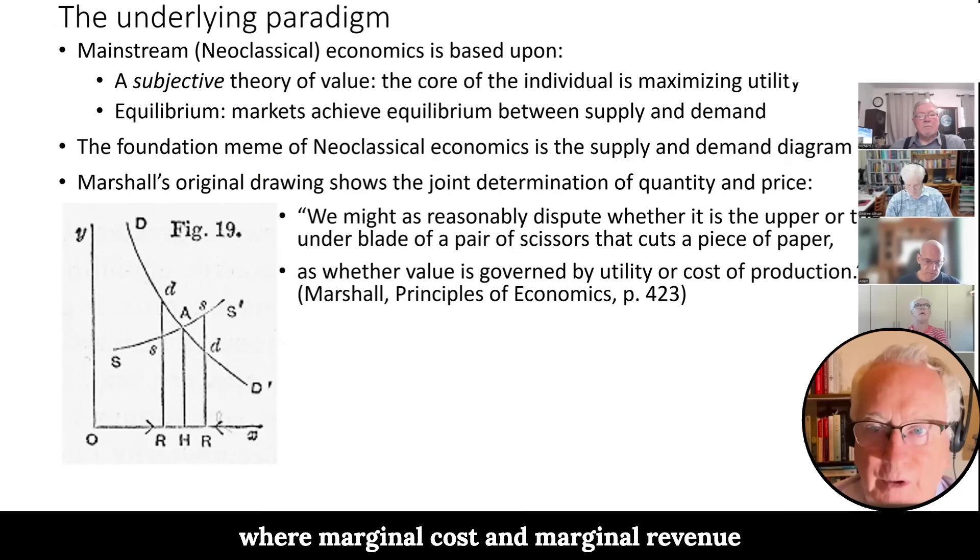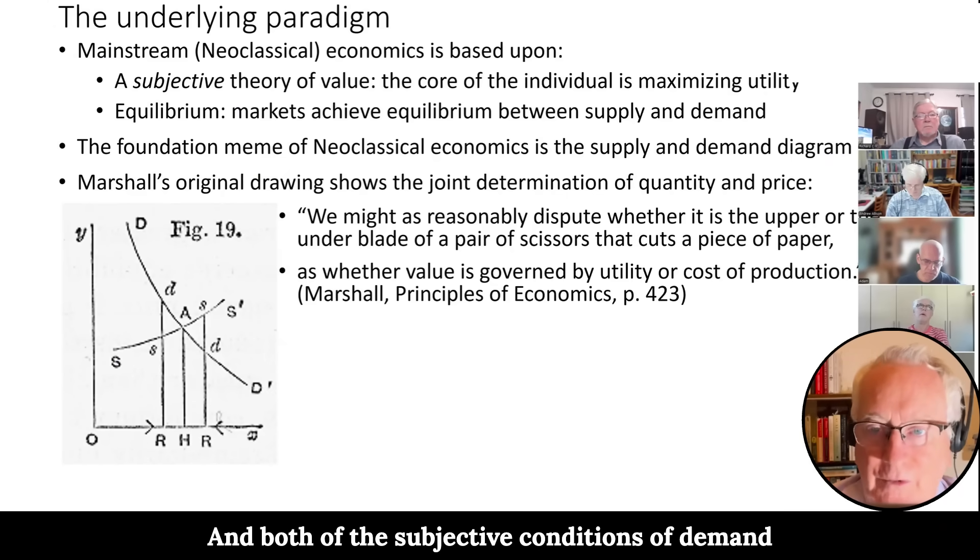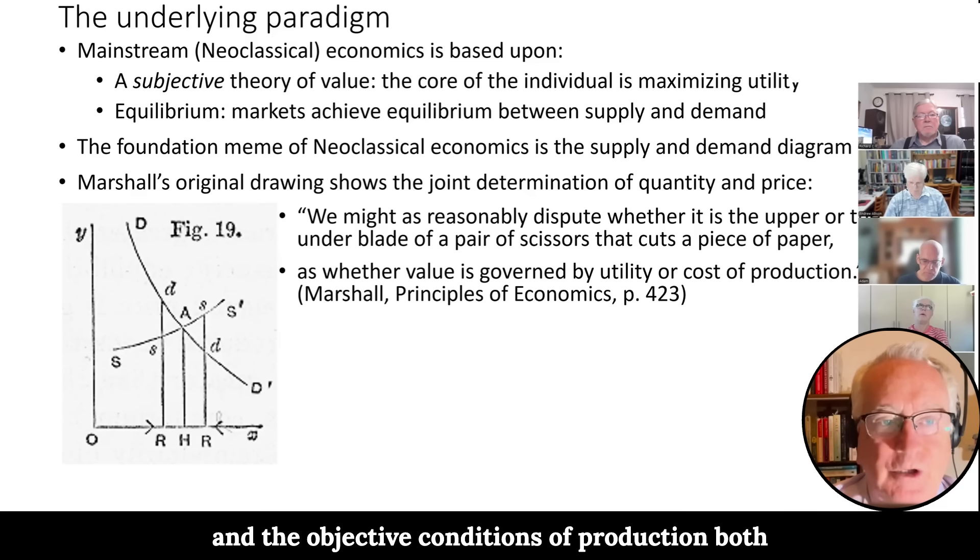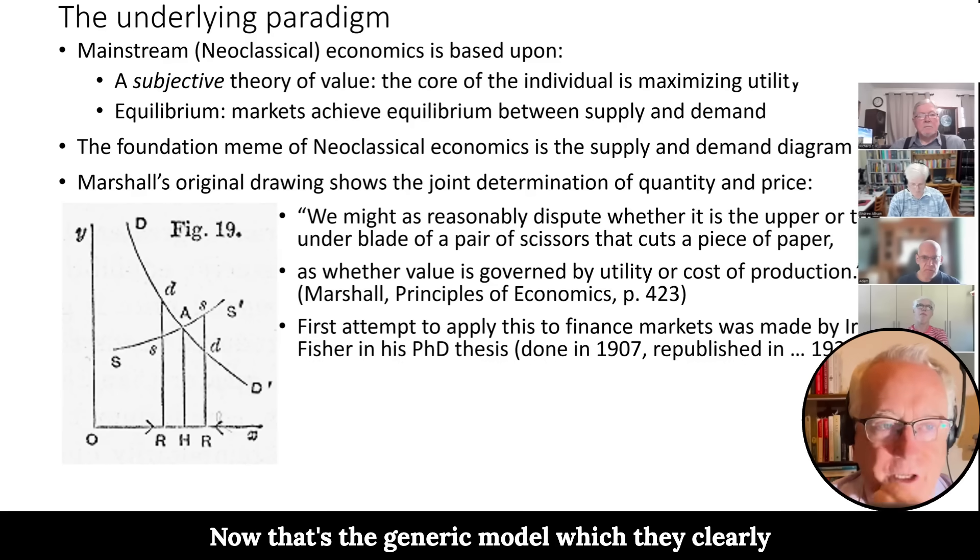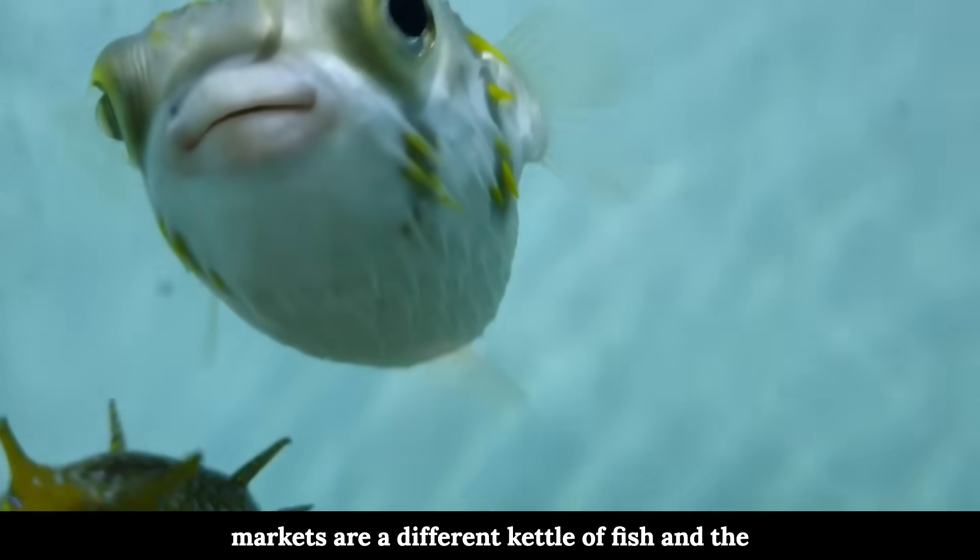So they reached a combined method where marginal cost and marginal revenue both came together to give you price. And both the subjective conditions of demand and the objective conditions of production, they play a role in setting both price and quantity. Now that's the generic model which they clearly apply to commodity markets, but the finance markets are a different kettle of fish.